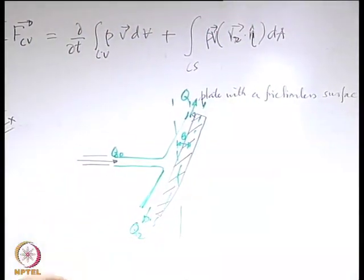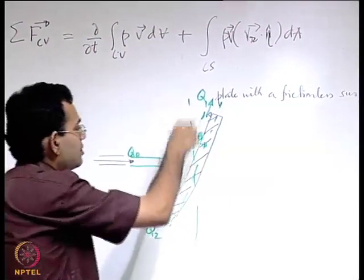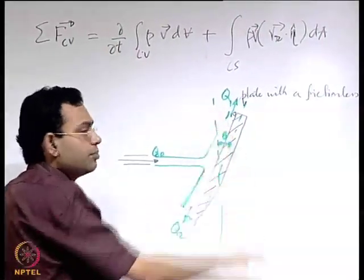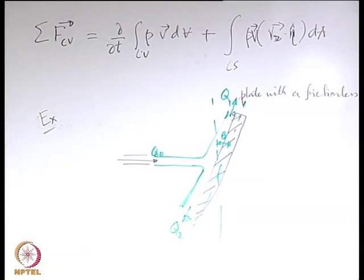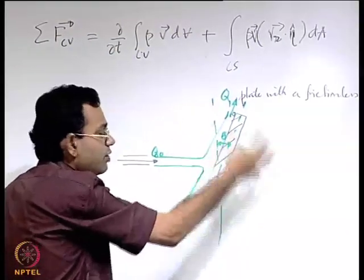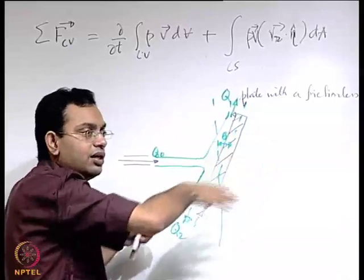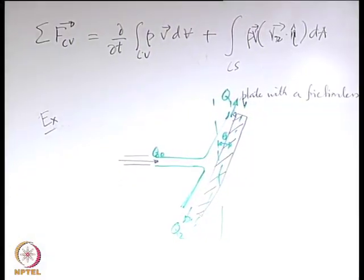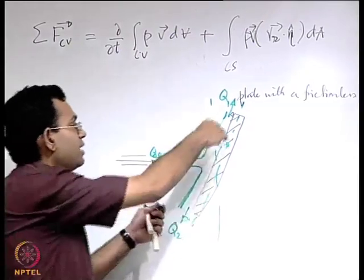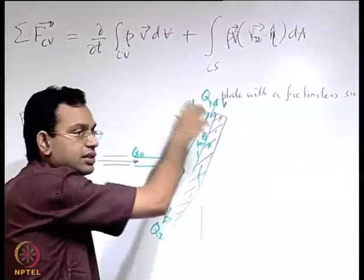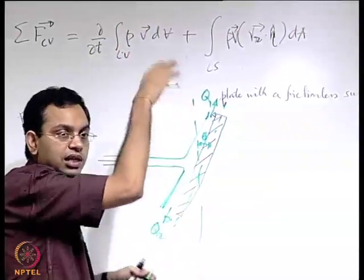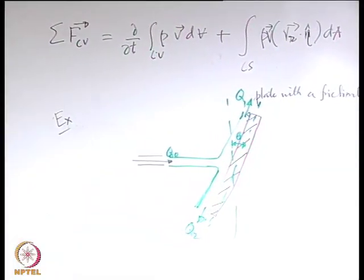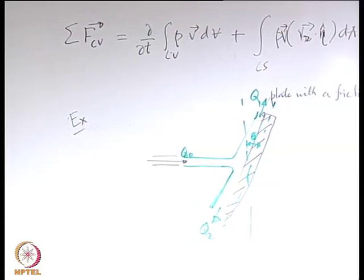We have to find out: if the volume flow rate here is q0, here the volume flow rate is q1, and here the volume flow rate is q2, and the angle made by the plate with the vertical is theta. We neglect the change in height between various points — the entire arrangement may be horizontal, or even if vertical, the plate height is so small that the change in potential energy is insignificant compared to kinetic energy.